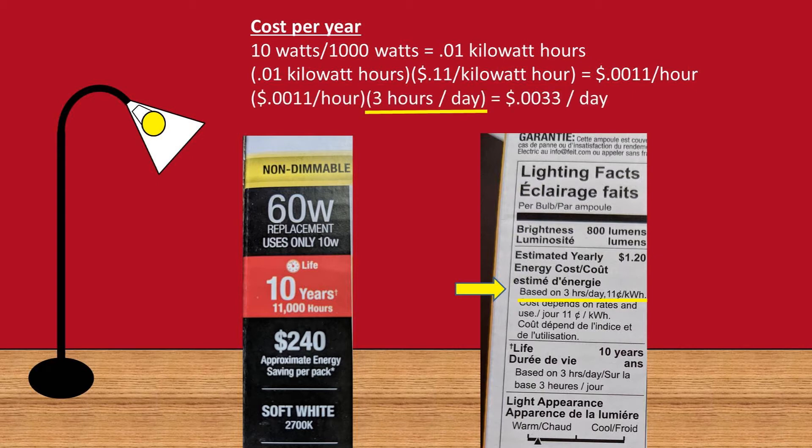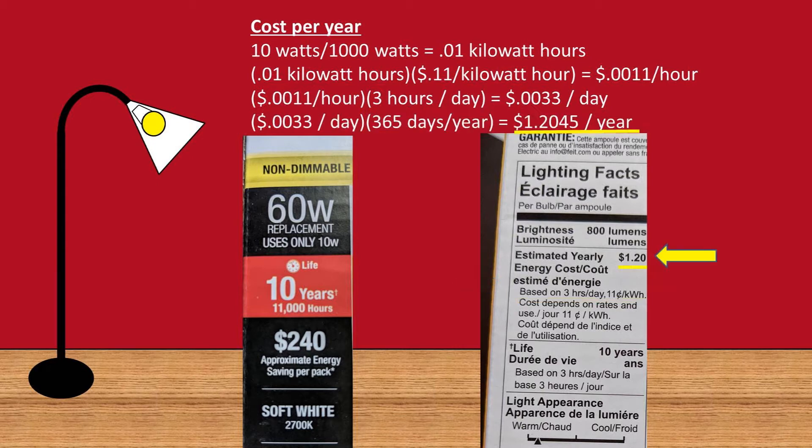The box assumes 3 hours per day, so we multiply this and we get 0.33 cents per day. For our final step, we multiply this times 365 days per year and get a cost of around $1.20 per year to run this light bulb — only one.